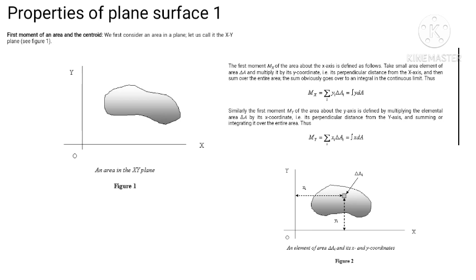Similarly, the first moment My of the area about the y-axis is defined by multiplying the elements delta A by the x coordinate, the perpendicular distance from the y-axis, and integrating over the entire area. Thus My equals summation of xi times delta Ai, which gives the integration of x dA.